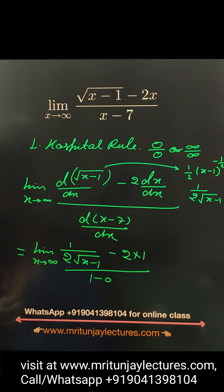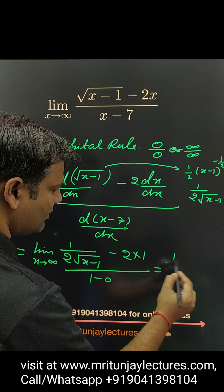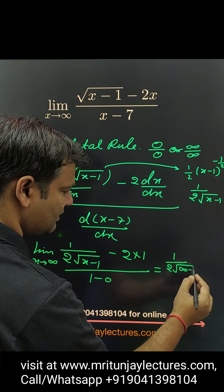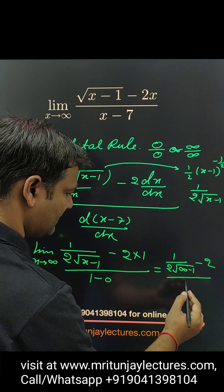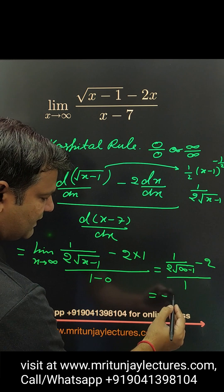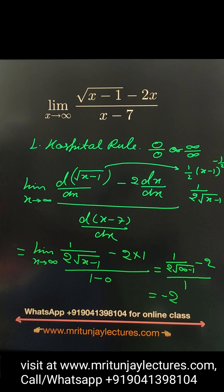Now put x equal to infinity. Then 2 into under root infinity minus 1 minus 2 divided by 1. That value is 0. 0 minus 2. That is final answer is minus 2 is the right answer.